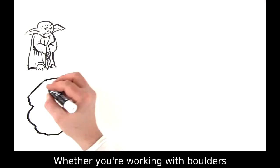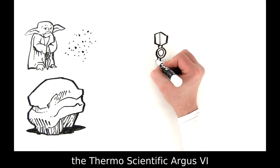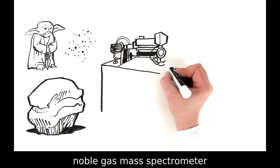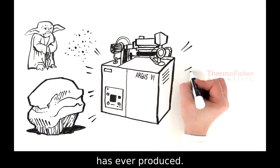Size doesn't matter. Whether you're working with boulders or 50 microns of stardust, the thermoscientific Argus-6 is the system for you. Equip your lab with the most sensitive and easy-to-use noble gas mass spectrometer that Thermo Fisher Scientific has ever produced.